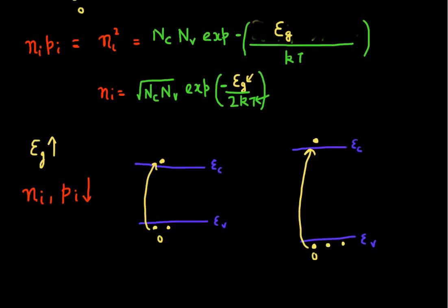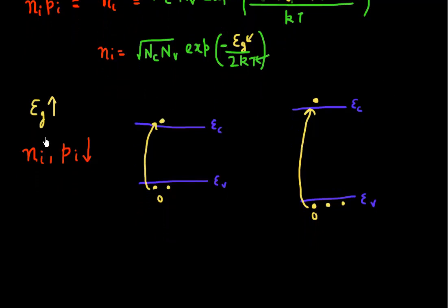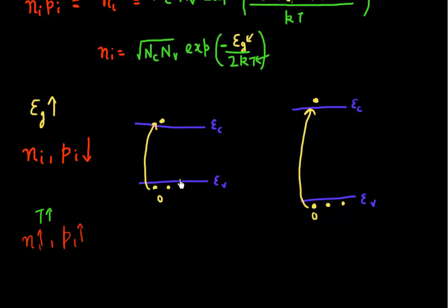Now let's build intuition about what happens when I increase the temperature. According to this equation, if I increase temperature, temperature is in the denominator of the exponential term, so increasing it reduces the magnitude of this negative exponential term. This means increasing temperature increases the number of electrons and holes. This makes sense: increasing temperature gives valence electrons enough energy to more easily jump over to the conduction band, so the number of electrons and holes in an intrinsic semiconductor should increase.